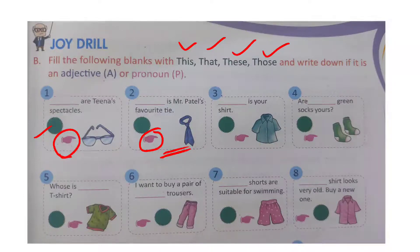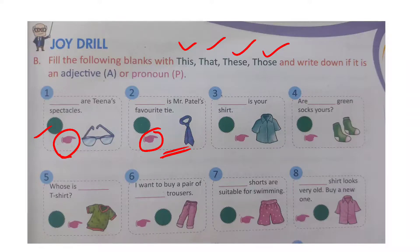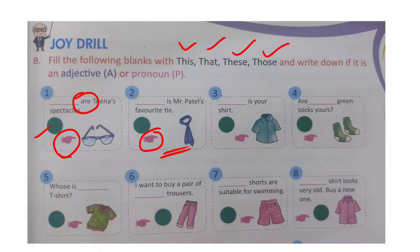First sentence: 'Dash are Tina's spectacles.' The spectacles are near the hand, so we use 'these'. 'These are Tina's spectacles.' Since 'are' is a verb and there is no noun after 'these', this is used as a pronoun. Write capital P in the green circle.